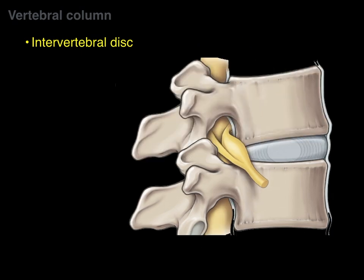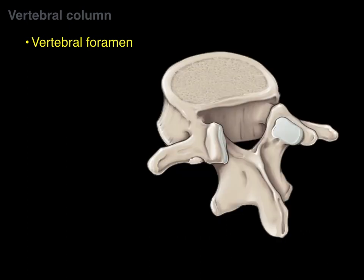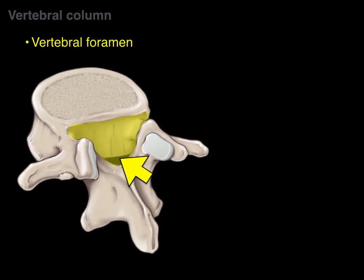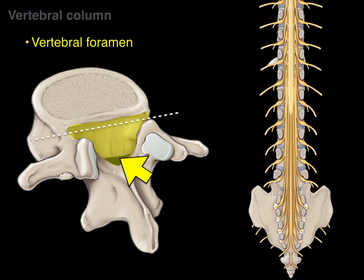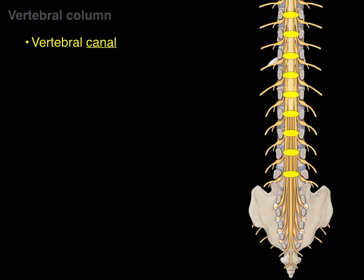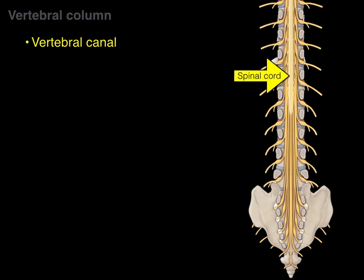The intervertebral disc allows for flexion, extension, and compression movement in the vertebral column at every segmental level. The vertebral foramen is the hole within each vertebra. When all the vertebral foramina are stacked end on end, they form the vertebral canal, and within the vertebral canal the spinal cord traverses through.